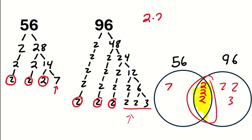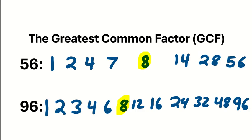So I take 2 times 2 times 2 and I'll get my GCF. 2 times 2 is 4, 4 times 2 is 8, thus the greatest common factor is 8.